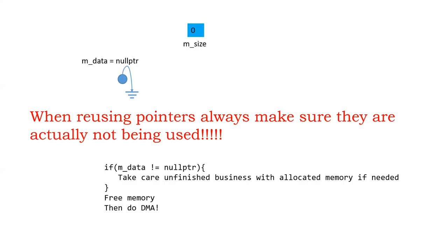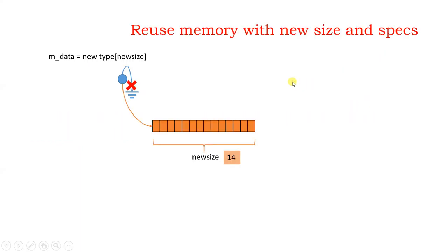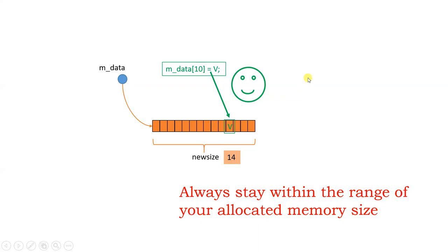When reusing memory, always make sure your memory is not already in use. If the pointer is not null, it means you have something pointed to — take care of unfinished business with that allocated memory if needed. After you're done, free the memory and then do the new dynamic allocation. First make sure everything is cleaned up, then call new with the new size. And always stay within the range of your allocated memory.